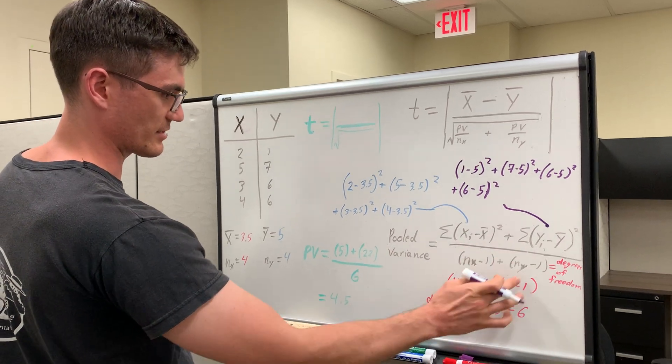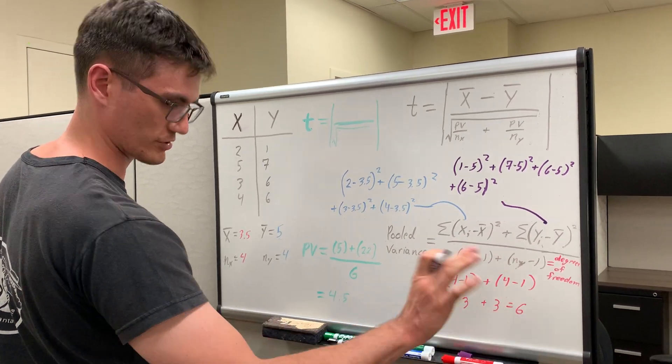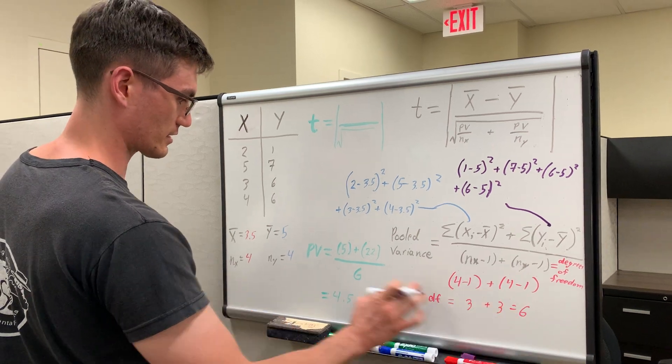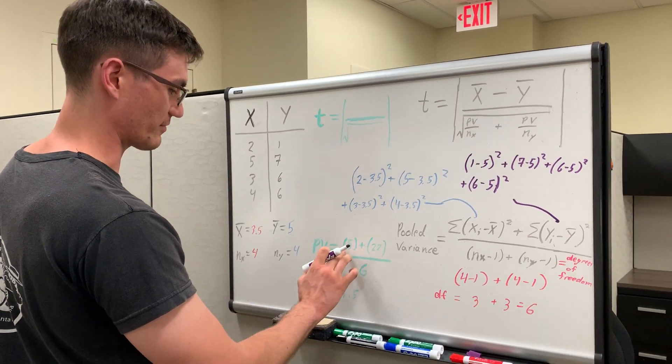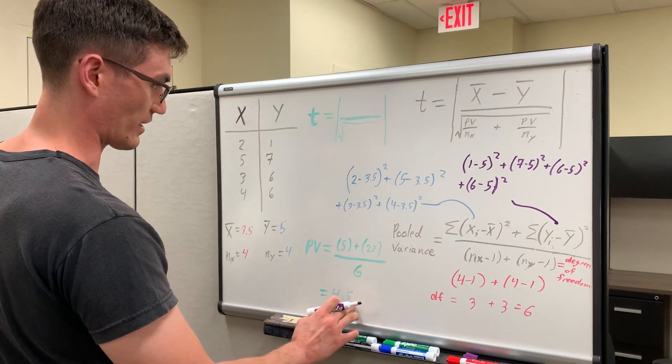We already found out the denominator down here, which is equal to degrees freedom, which we'll talk about in a second, is equal to 6. So 5 plus 22 equals 27, divided by 6 equals 4.5.